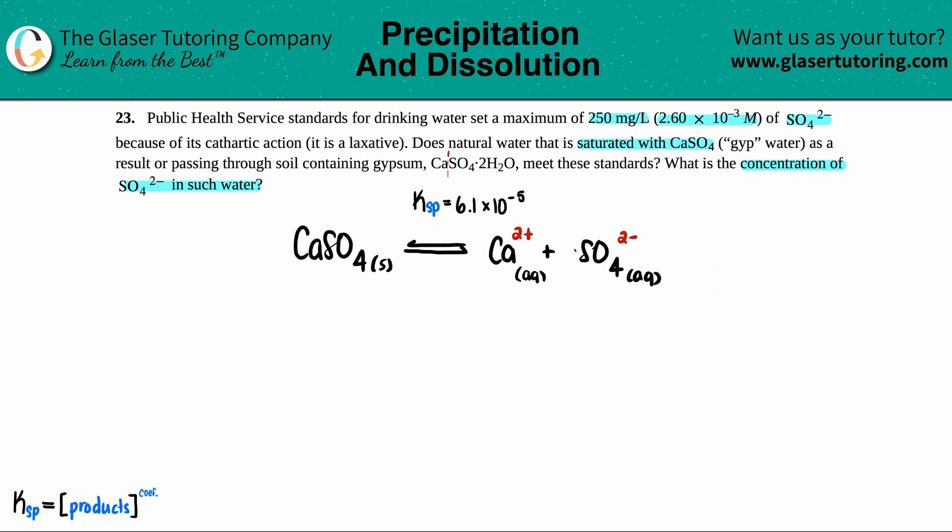Now what we're going to do is we're going to use this to get our Ksp equation. And I wrote down what the general Ksp equation is. Over here, Ksp is just equal to the products raised to the coefficients. So in our case, Ksp would equal the concentration of the calcium 2 plus times the concentration of the sulfate SO4 2 minus.